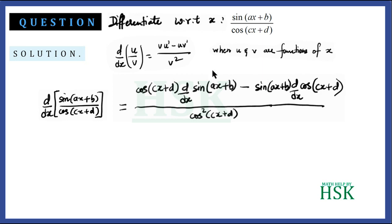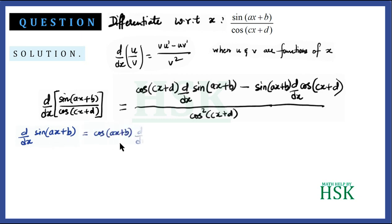To solve further, we calculate d/dx of sin(ax + b) and d/dx of cos(cx + d). The differentiation of sin(ax + b) equals cos(ax + b) times d/dx of (ax + b), applying chain rule — since differentiation of sin x is cos x, we multiply cos(ax + b) by d/dx of (ax + b).